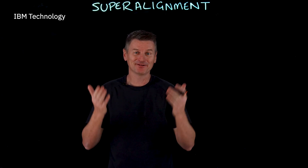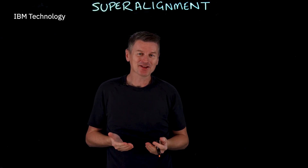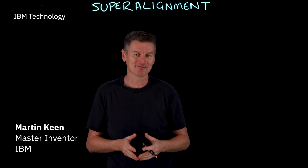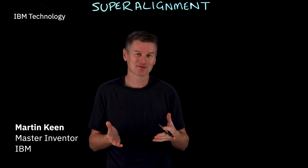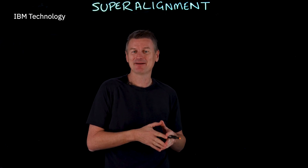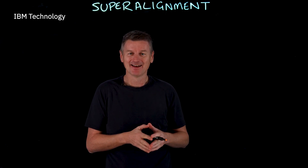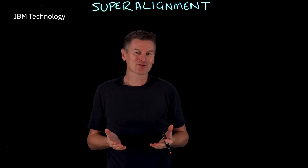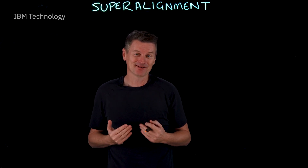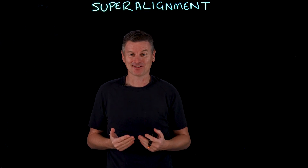Super alignment refers to the challenge of making sure that future AI systems, meaning systems with super intelligent capabilities, act in accordance with human values and intentions.